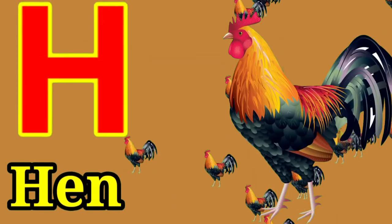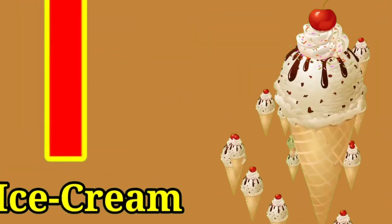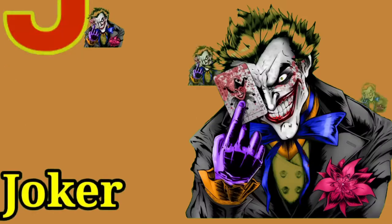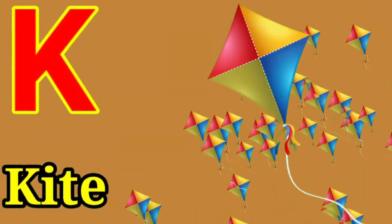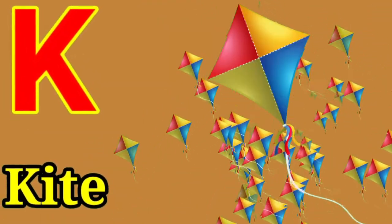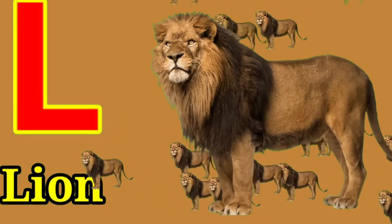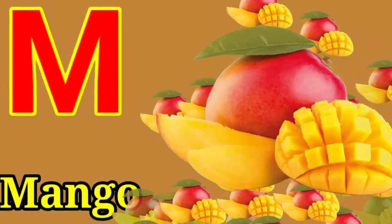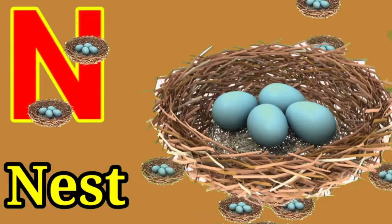H for hen, I for ice cream, J for joker, K for kite, L for lion, M for mango.